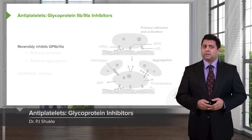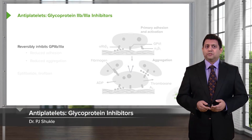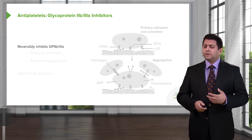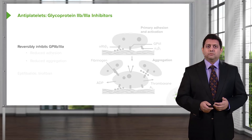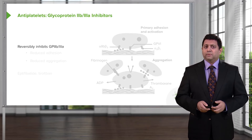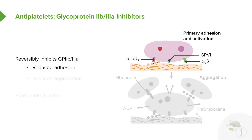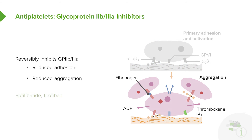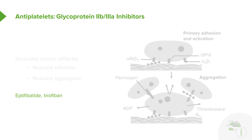The next group of drugs are the glycoprotein 2B3A inhibitors. We've already discussed how important GP2B3A is in platelet adhesion and aggregation. These inhibitors reduce adhesion and reduce platelet aggregation. The specific drugs in this class are used primarily in the cath lab to inhibit platelet aggregation after catheterization.